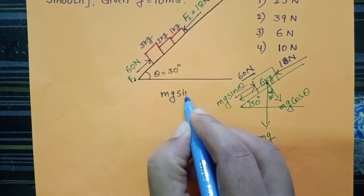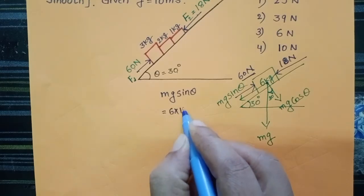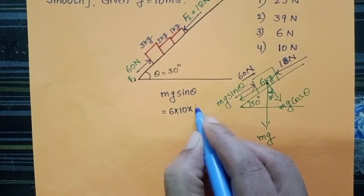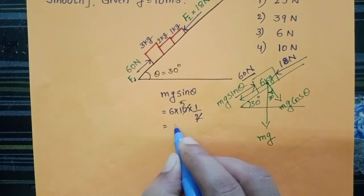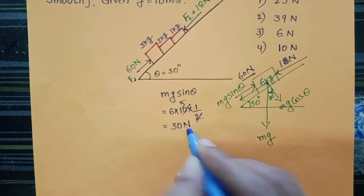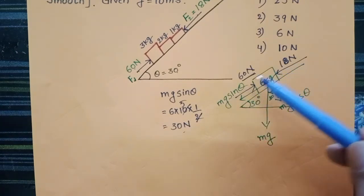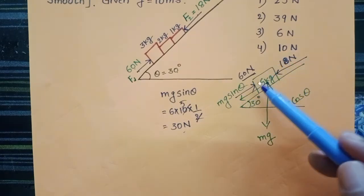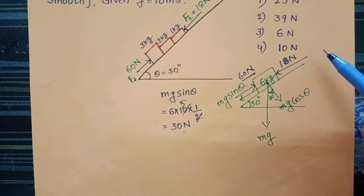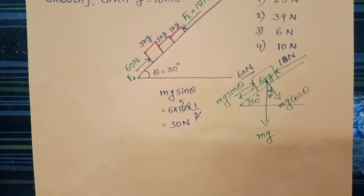First, find mg sinθ. mg sinθ equals 6 × 10 × sin30° = 6 × 10 × (1/2) = 30 newtons acting in the downward direction. So 30 newton and 18 newton together give 48 newtons acting downward. But in the upward direction, 60 newtons is acting. Therefore, the upward force is greater, and the resultant force is acting in the upward direction.